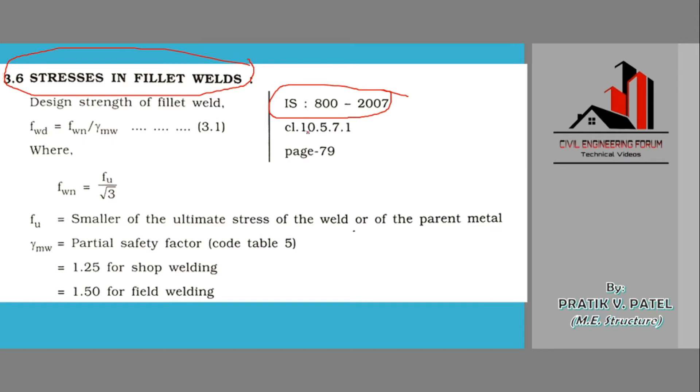We can refer the code IS 800-2007 and clause 10.5.7.1, page number 79. To get the design strength of fillet weld, what is the design strength of fillet weld, we can get from here.